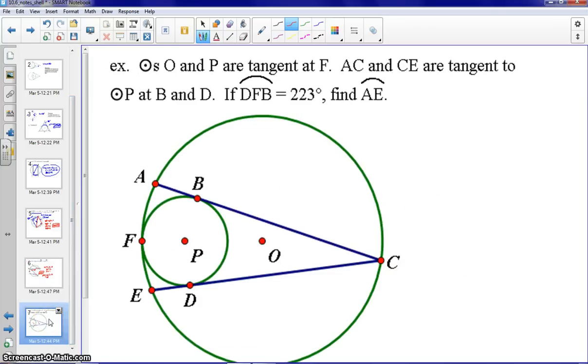And last but not least, we have two circles O and P. They're tangent at point F. We also know that AC and CE are tangent to circle P at points B and D. We have the measure of arc DFB is 223. I'm going to highlight that in red. That is 223 degrees. We are looking for the measure of arc AE.